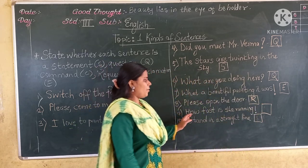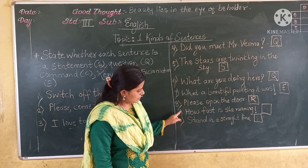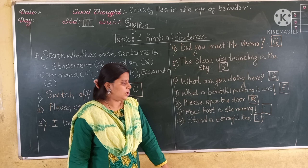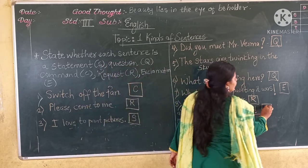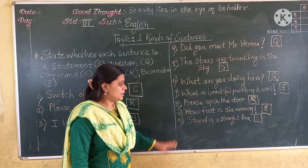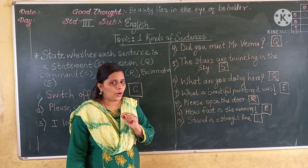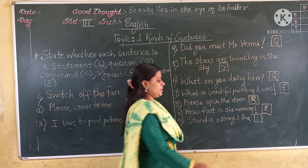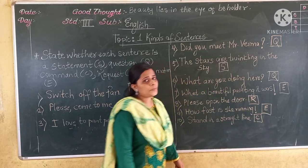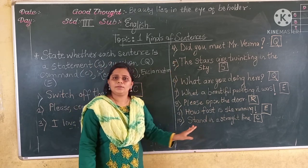Next sentence: How fast is she running! You can see this sentence ends with an exclamation mark, so this is an exclamation — E. The last one: Sit in a straight line. This gives you an order, so this is command — C. I hope students you have understood today's exercise. Thank you.